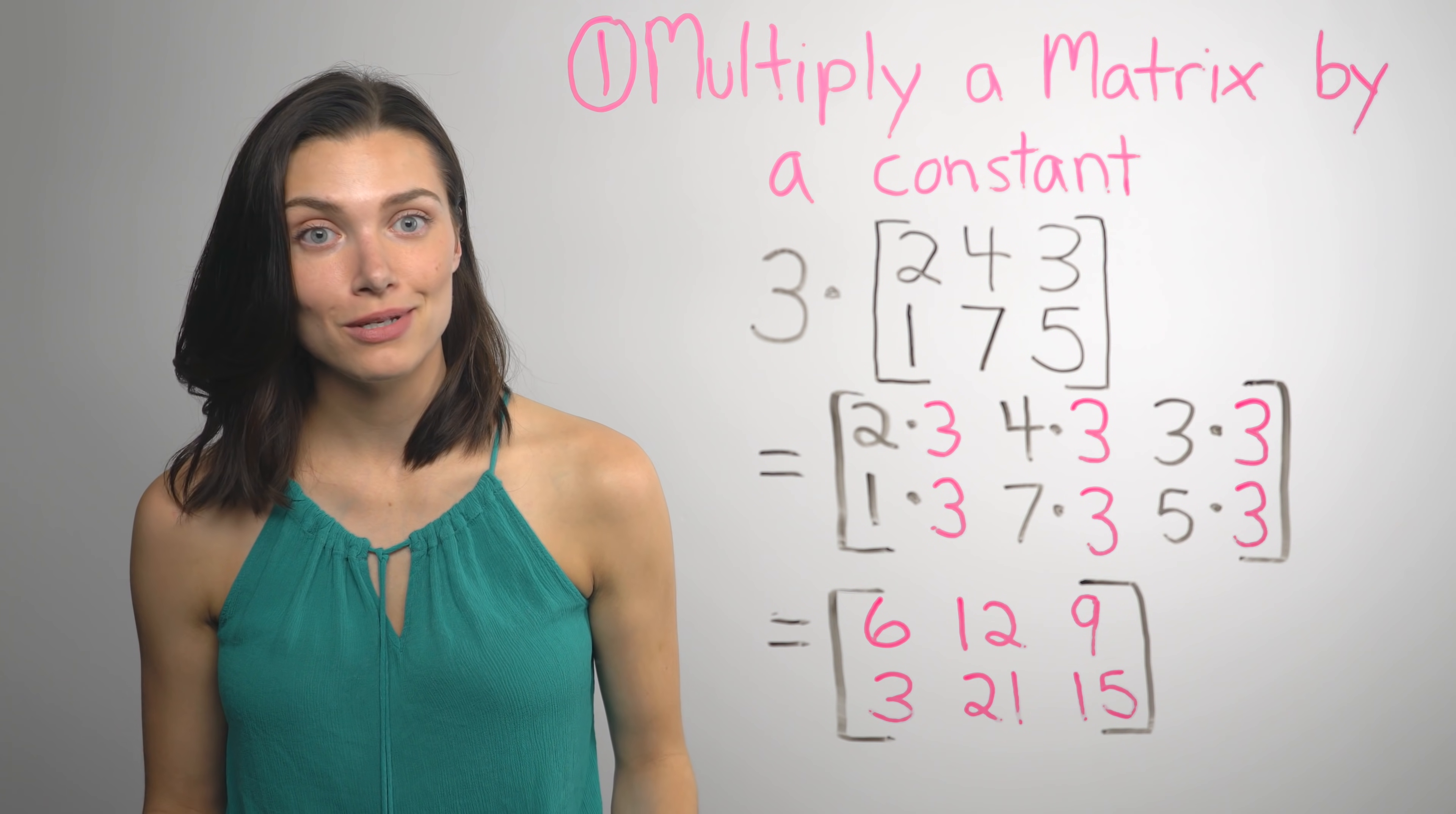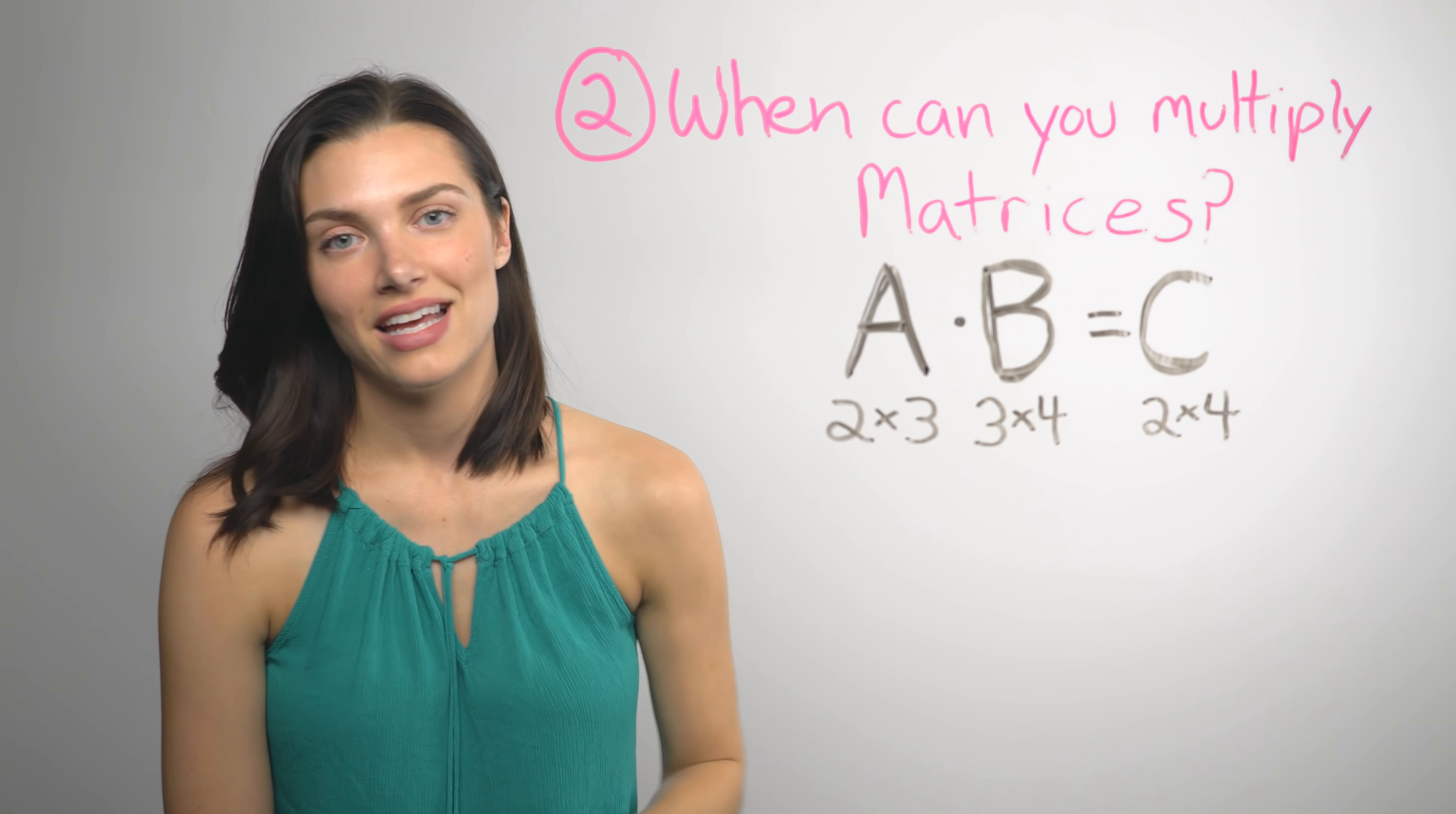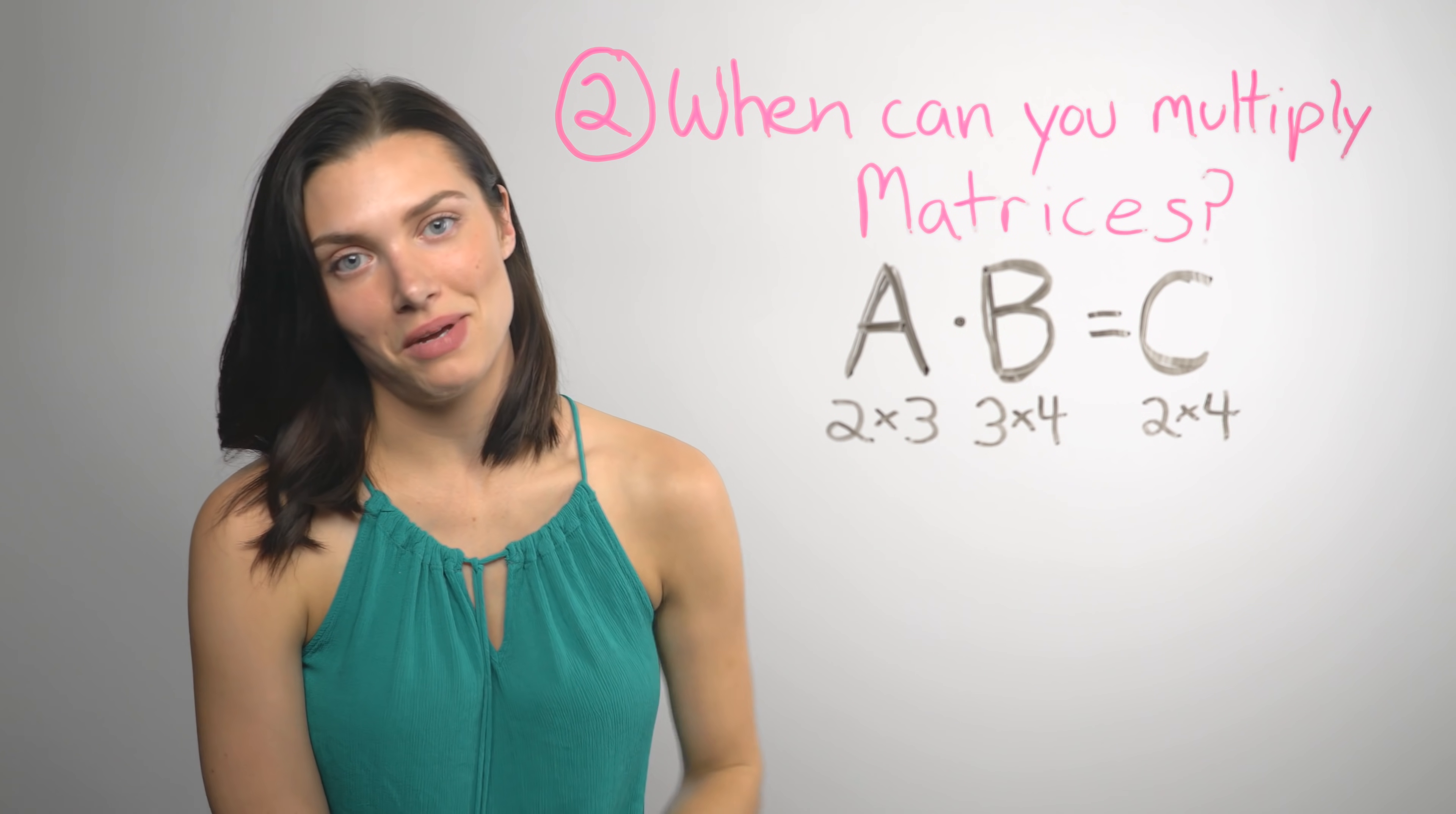So what happens when you multiply one matrix by another one? So here's an equation where two matrix variables are being multiplied. I said earlier that the matrices can be different sizes, but the size of the matrices does matter. So the thing to remember is that the number of columns in the first matrix has to equal the number of rows in the second matrix.